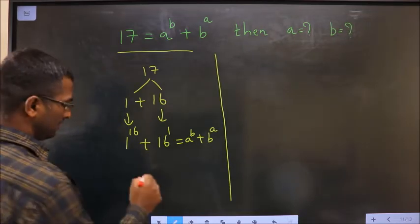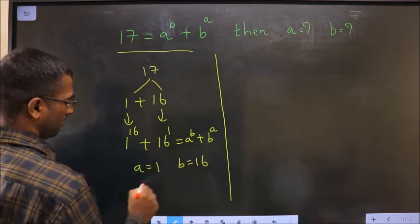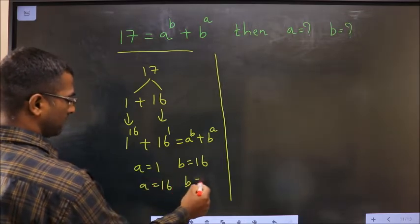So, a is 1, b is 16, or a is 16, b is 1.